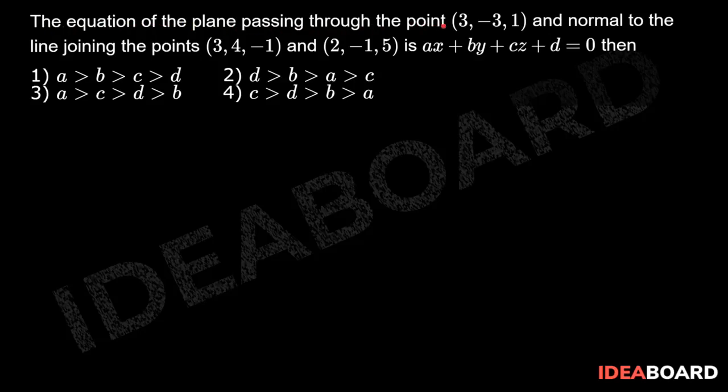The equation of the plane passing through the point (3, -3, 1) and normal to the line joining the points (3, 4, -1) and (2, -1, 5) is ax + by + cz + d = 0. Here the given points A